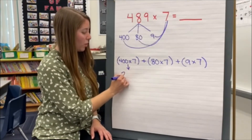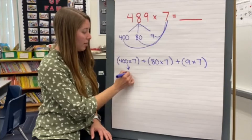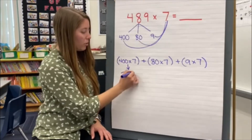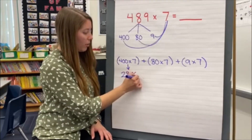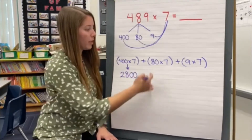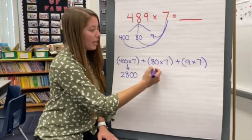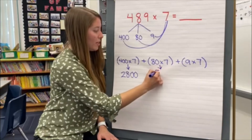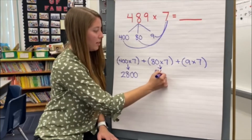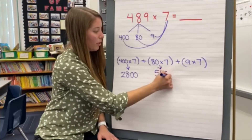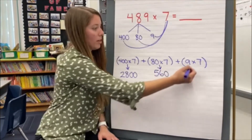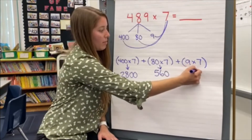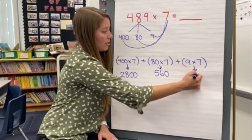So 400 times 7: 4 times 7 is 28, and those two zeros come on down — giving us 2,800. Then 80 times 7: 8 times 7 is 56, and our zero comes down — giving us 560. And 9 times 7 is 63.